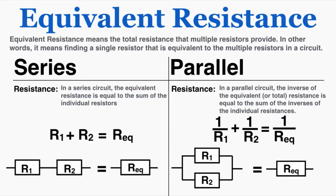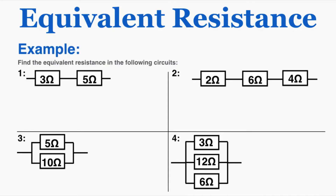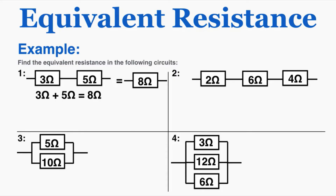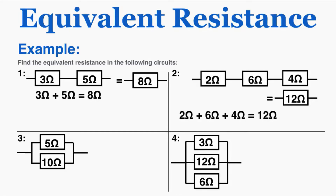Here are some examples. For circuit number one, which is a series circuit, we just add the resistances together and get a final equivalent resistance of 8 ohms. That means those two resistors behave the same as a single 8-ohm resistor. For circuit number two, also a series arrangement, adding them together gives an equivalent resistance of 12 ohms — so those three resistors behave like a single 12-ohm resistor.